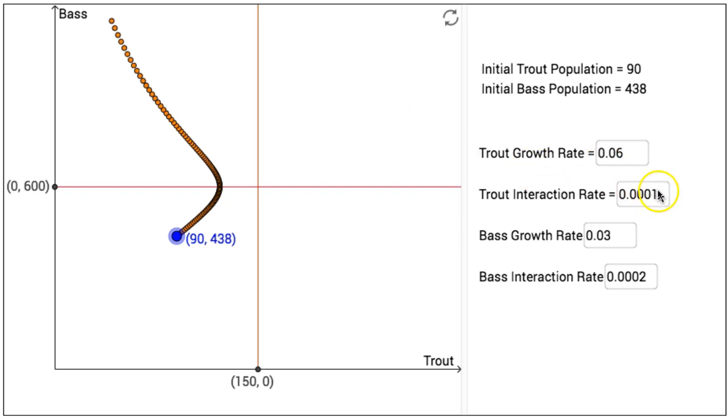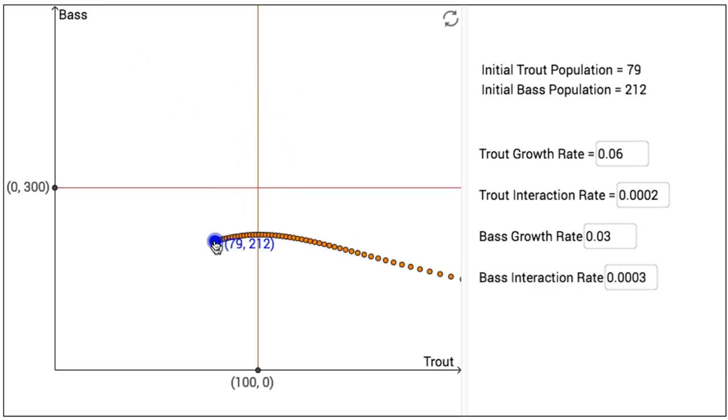If we want to change the trout interaction rate, instead of 0.0001, we change it to 0.0002. And the bass interaction rate, I will change from 0.0002 to 0.0003. And the population behaves a little bit differently over time.